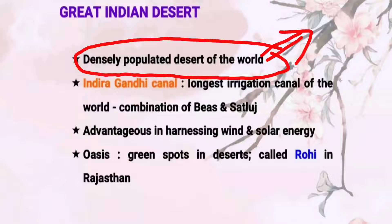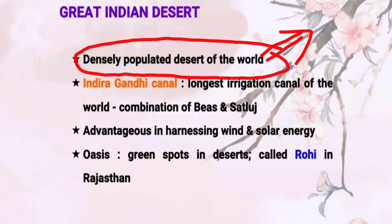The Great Indian Desert is the most densely populated desert in the world. You will see a number of cities in that area, like Jaisalmer, Barmer, Bikaner, Ajmer, and Bhilwara. There are also famous shrines, like the Sheikh Moinuddin Chishti shrine in Ajmer. In areas like Pushkar, camel fairs are quite famous — because the camel is the ship of the desert.